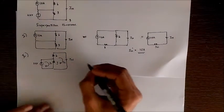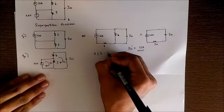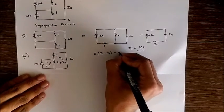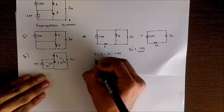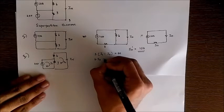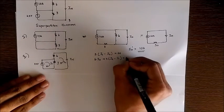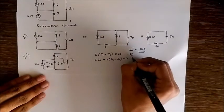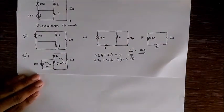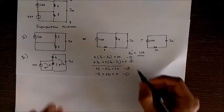we get 3 into (I1 - I2) equal to 20 and 6I2 plus 3 into (I2 - I1) equal to 0. So these are our two mesh equations from which we have to obtain I2. Simplifying these two equations,